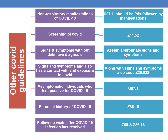For non-respiratory manifestations of COVID, U07.1 should be the PDX followed by the respective manifestation codes. For screening of COVID, the code is Z11.52. For signs and symptoms without a definitive diagnosis — if the patient has signs and symptoms related to COVID but no definitive diagnosis — assign the appropriate signs and symptoms such as cough, fever, headache, etc. If the patient also has contact with or exposure to COVID, along with the signs and symptoms, code Z20.822, which is the code for contact with and exposure to COVID-19.